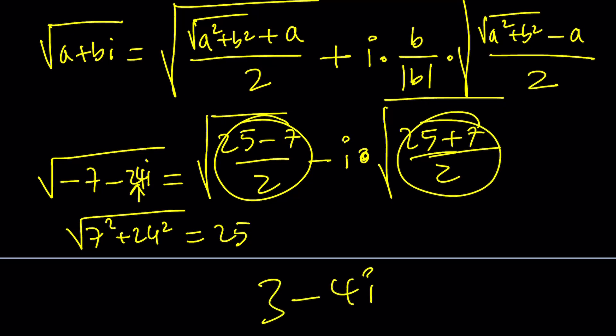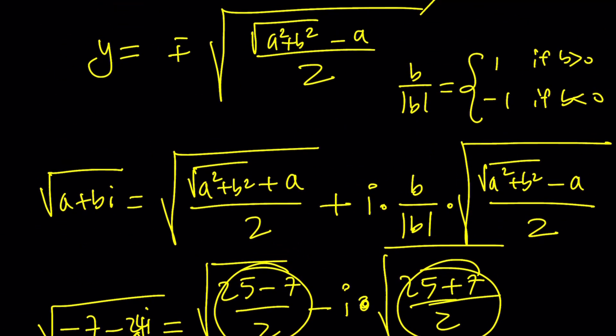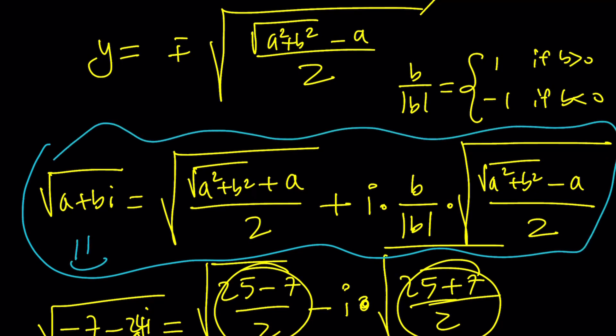Therefore one of the roots is 3 minus 4i. The other root is negative 3 plus 4i, it's opposite. And you can go out and check it out. This brings us to the end of this video. Thank you for watching. I hope you enjoyed it. Please let me know. Don't forget to comment, like, and subscribe. I'll see you next time with another video. Until then, be safe, take care, and bye bye.